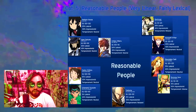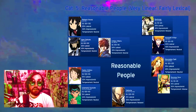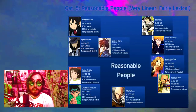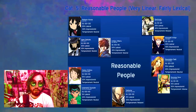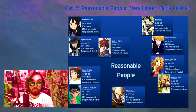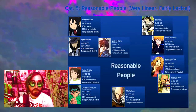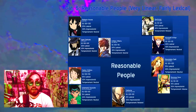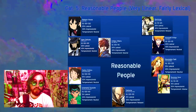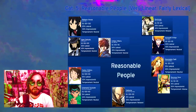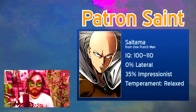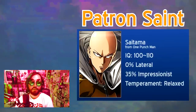Category 5: Reasonable People — Very Linear, Fairly Lexical. While linear thinkers are usually very straightforward in their communication, that doesn't mean they can only ever communicate through words. The human brain was fundamentally designed to be able to understand things without the use of language. Reasonable people, while still mostly relying on language to communicate, are more capable of listening to their gut and considering the validity of ideas which they have yet to fully codify. It's hard to find a character like this with an especially high IQ, but the category's patron saint is Saitama from One Punch Man.